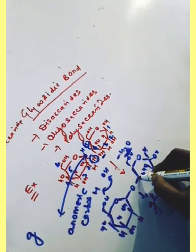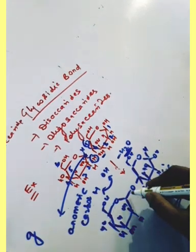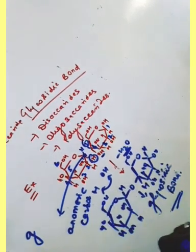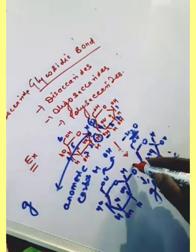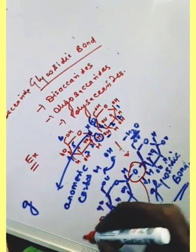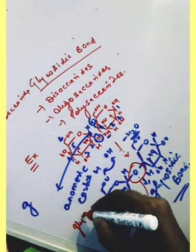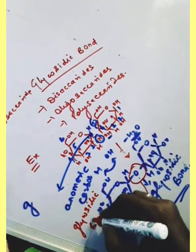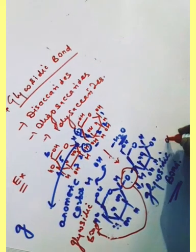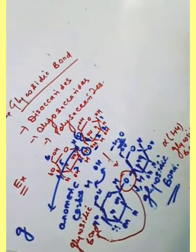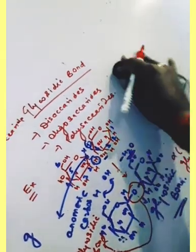Carbon has four valences, so here three valences are used and you can fulfill the remaining one with a hydrogen. The formation of this bond is called the glycosidic bond. If you see here, this is called the alpha 1-4 glycosidic bond.